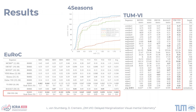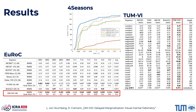We evaluate our method on three datasets capturing flying drones, handheld, and automotive scenarios, and show that the method exceeds the state of the art in visual inertial odometry, even outperforming popular stereo inertial methods.